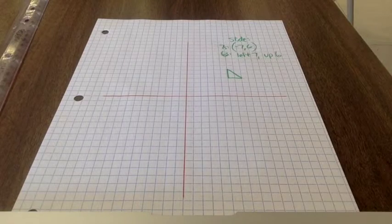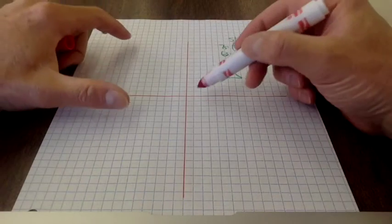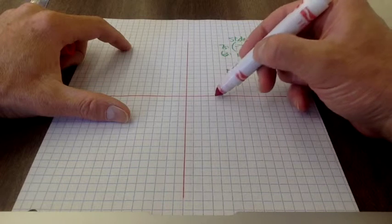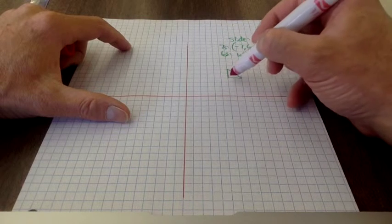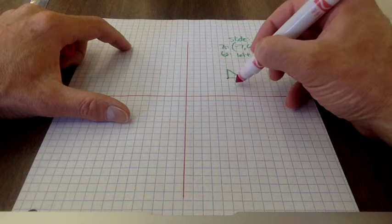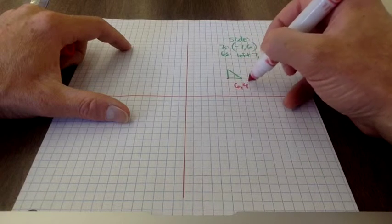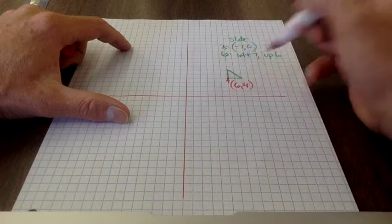The other way of doing this that I talked about last week is when you already have the coordinates. So one, two, three, four, five, six. So this point here is six comma four. Okay? Right there.